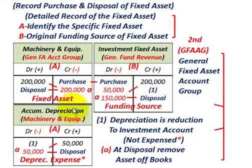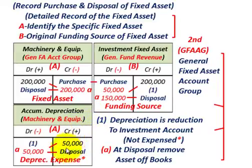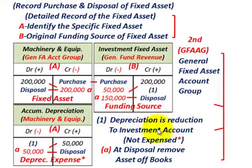After a couple of years, we have accumulated depreciation on the fire truck. We credit accumulated depreciation for the machinery and equipment account for $50,000. The key is that the debit does not go to depreciation expense. Instead, it goes to a reduction in our investment in the fixed asset account under general fund revenue — we debit that for $50,000. So depreciation is a reduction to the investment account, not an expense.